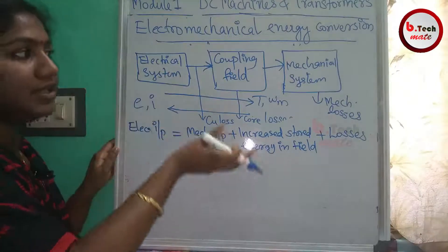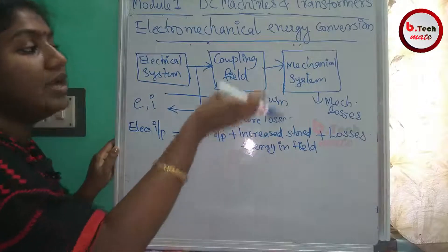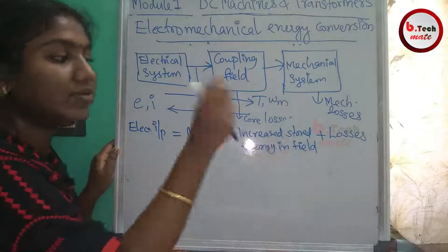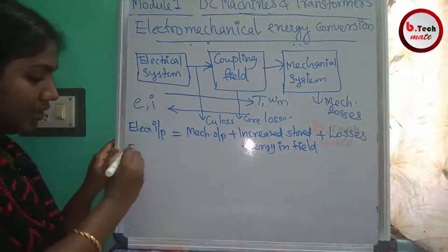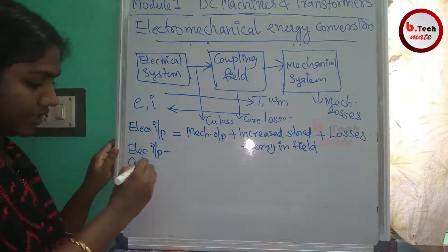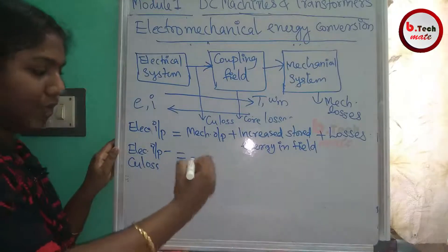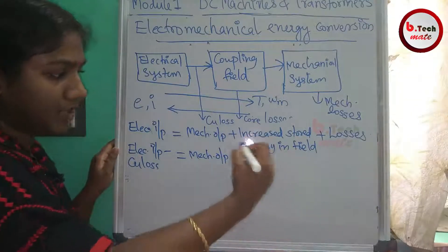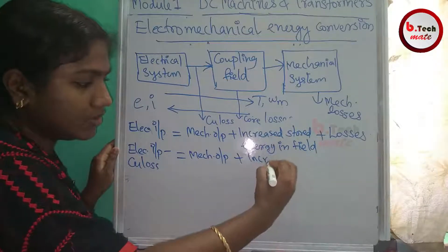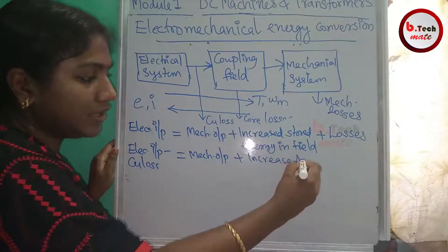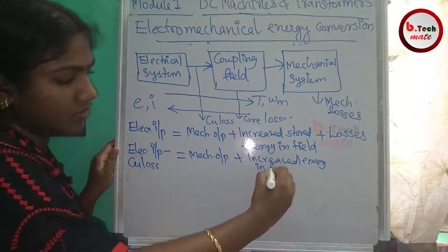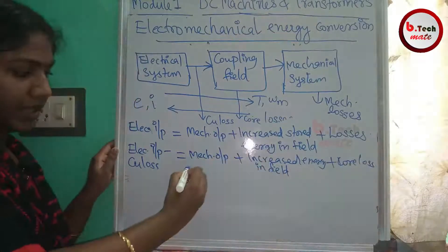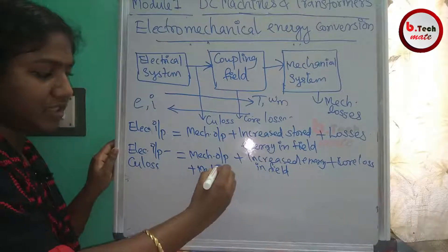Electrical input minus Copper Loss equals Mechanical Output plus Increased Energy in the Field plus Core Losses. The mechanical output also includes mechanical losses such as frictional and windage losses.